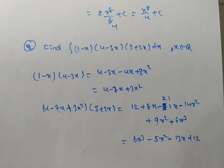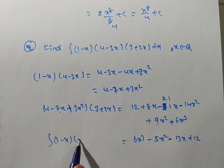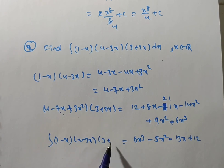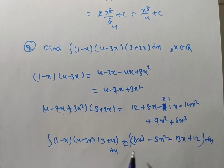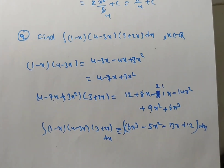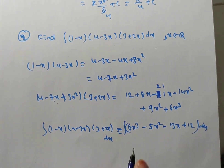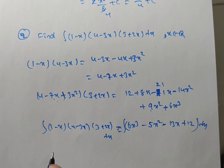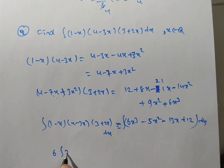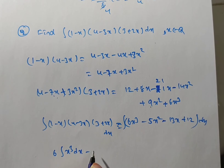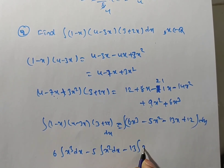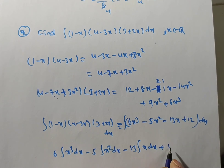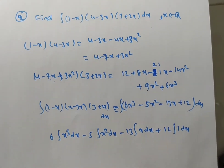So integral of (1 minus x)(4 minus 3x)(3 plus 2x) dx equals the integral of the polynomial 6x cubed minus 5x squared minus 13x plus 12. By the linearity property we can write this as 6 times integral x cubed dx minus 5 times integral x squared dx minus 13 times integral x dx plus 12 times integral 1 dx.